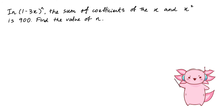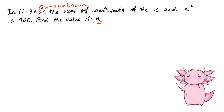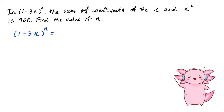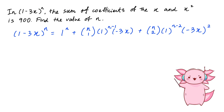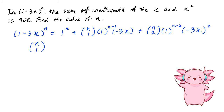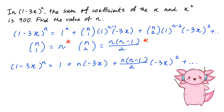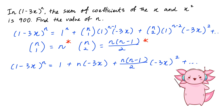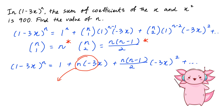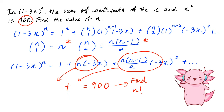There's an even harder type where they give you an unknown power and you need to solve for n. You expand the first three terms, and you need to memorize that nC1 = n and nC2 = n(n−1)/2. Then take the coefficients of x and x-squared and equate them to find n.